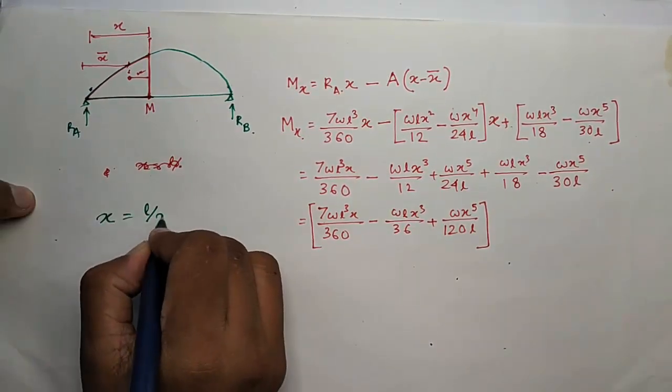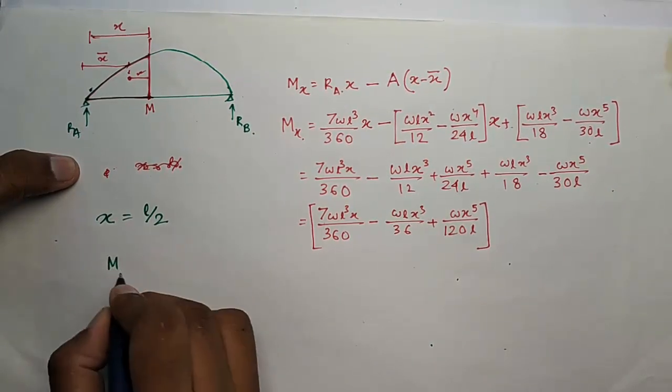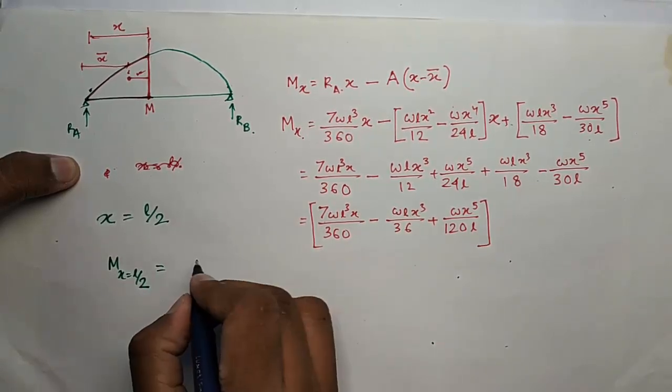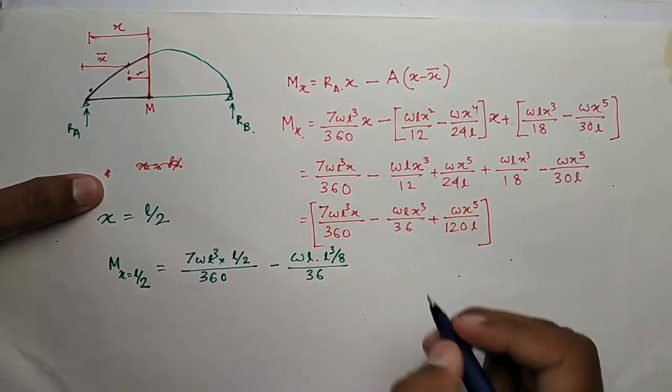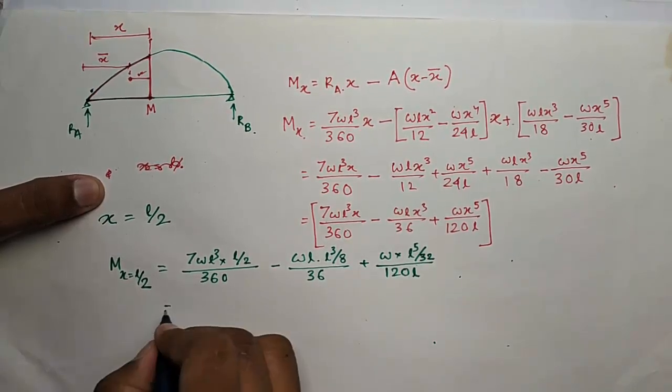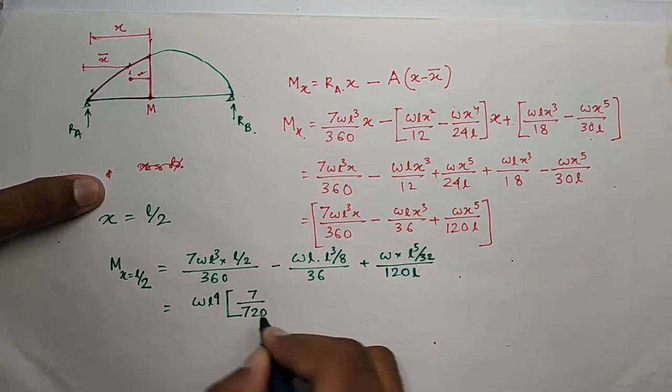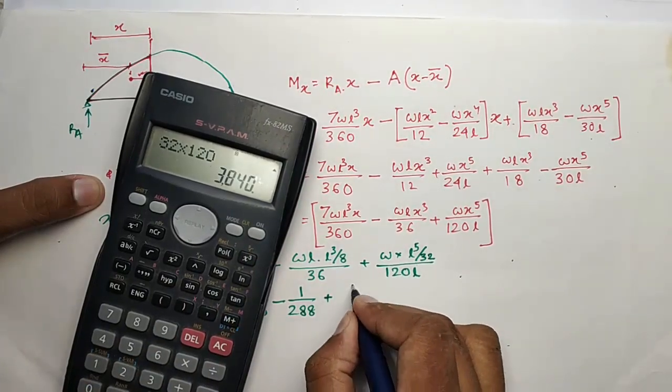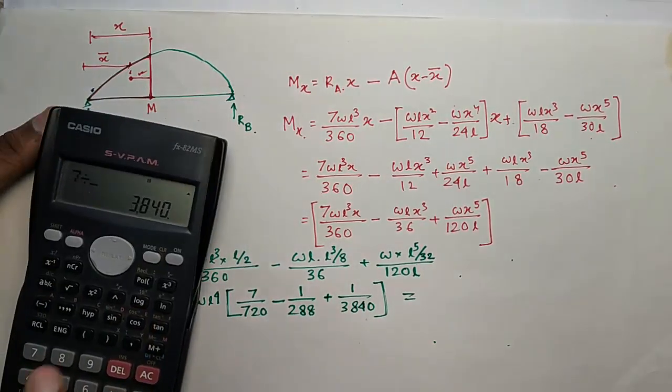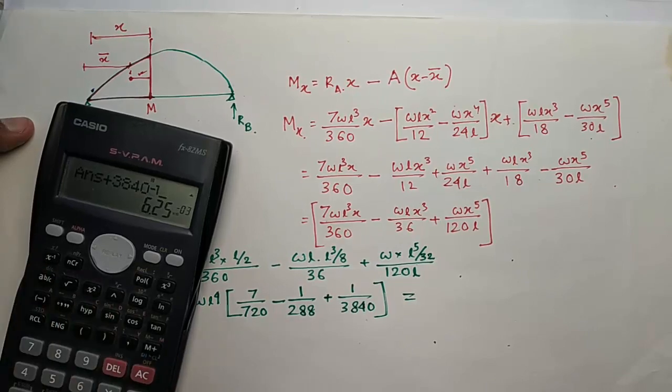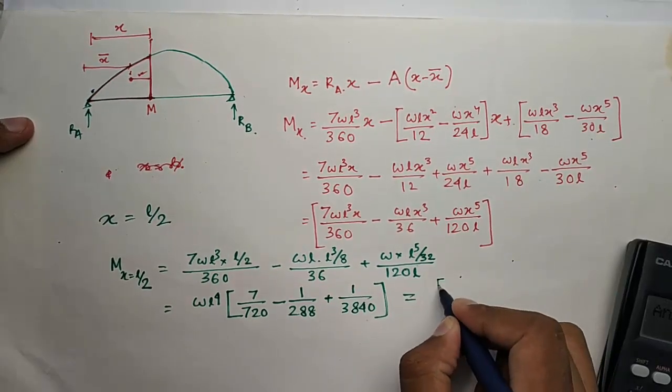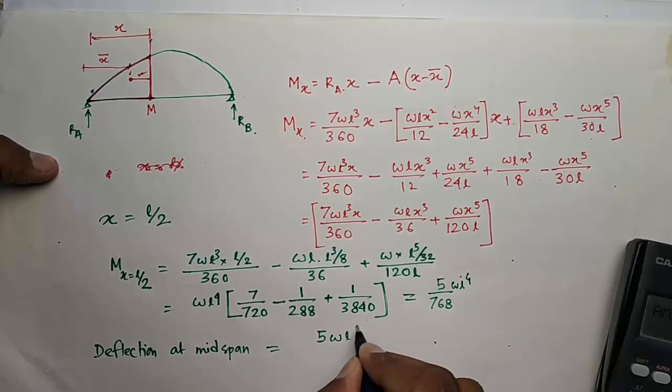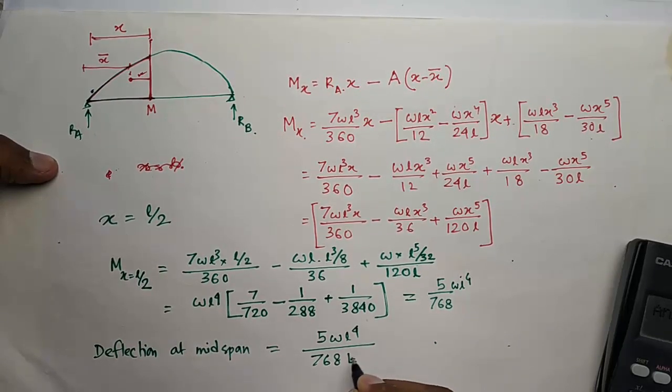This is the moment equation. Put the value of x equal to L by 2 to get the deflection. So moment at x equal to L by 2, put the value of x here equal to L by 2. The deflection at mid-span of the beam will be equal to 5WL to the power 4 by 768EI downward.